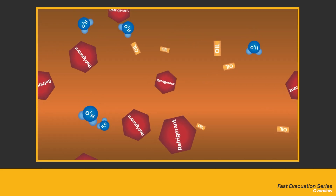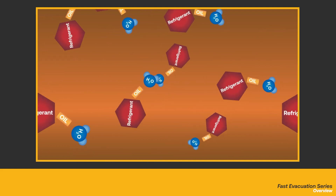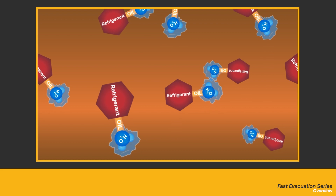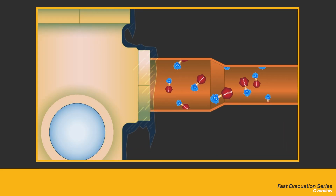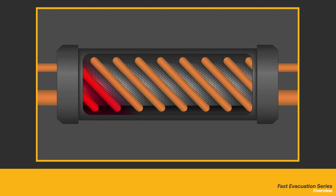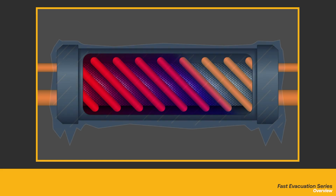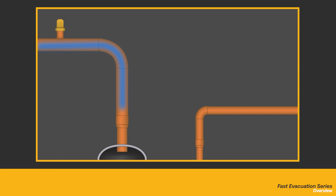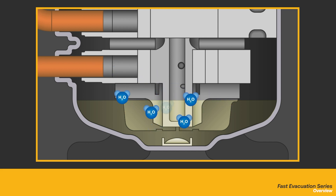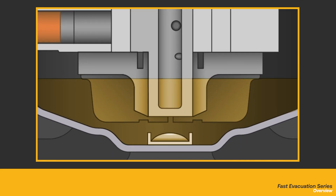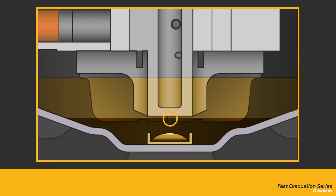Both refrigerant and compressor oil are hygroscopic, meaning moisture is absorbed quickly. As refrigerant circulates through the system, the moisture will freeze in components such as the expansion valve, causing blockages. It will also reduce the heat exchanger's capacity to absorb and reject heat, reducing system efficiency. As the refrigerant enters the compressor, it carries moisture which mixes with the compressor oil. This will negatively affect the oil, altering its viscosity and lubrication capabilities. This turns the oil into a sludge that can build up and block strainers, valves, capillary tubes and other components.